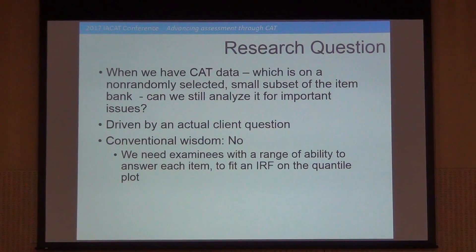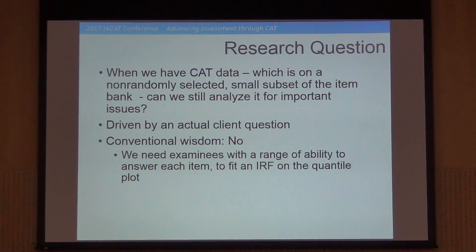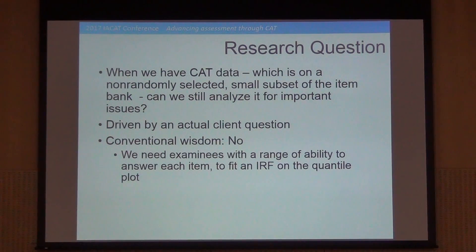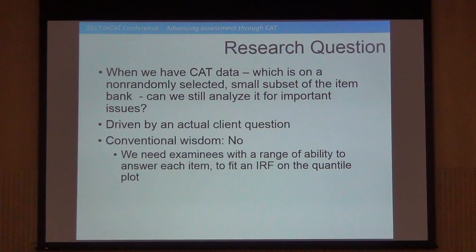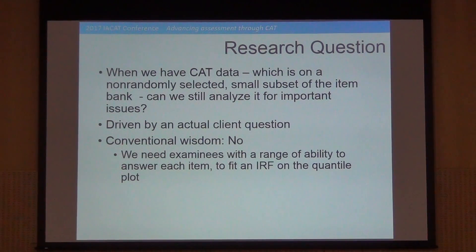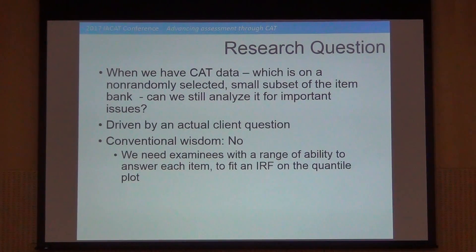You've got an item pool of 200 items and every examinee is only seeing 20, 40, or 60 items out of that pool of 200. It's a very non-randomly selected subset because there are severe range restrictions — the high-ability people at the top end of the distribution are only seeing the most difficult items. So we've got this really poor data set. One of my colleagues asked whether we're still interested in looking for DIF in that item pool, and whether we can actually look at the data set to see if there were any results. The conventional wisdom says no, because the data set is too sparse and non-random, so we won't be able to detect effects.